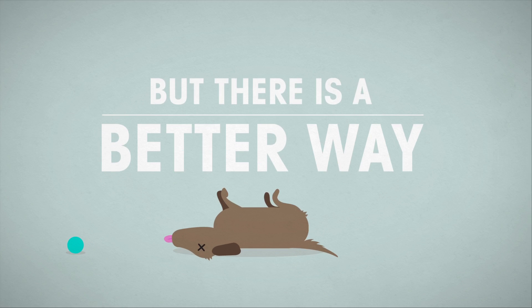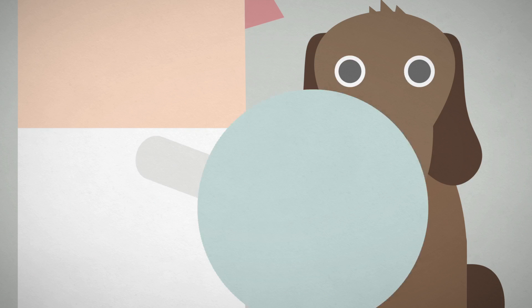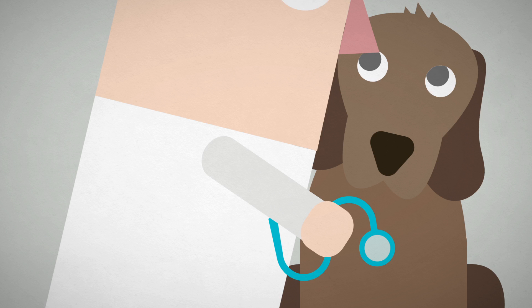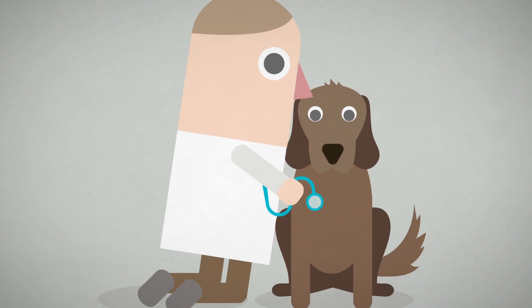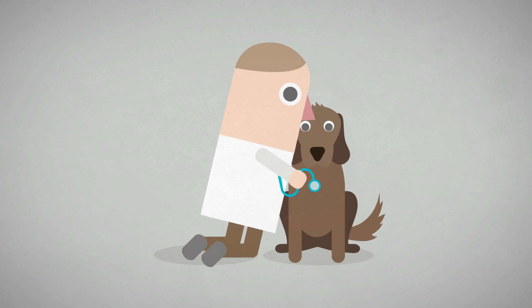But there is a better way. Vaccinating dogs against rabies reduces rates of the disease in people, meaning the dogs and people of India can live safely together.